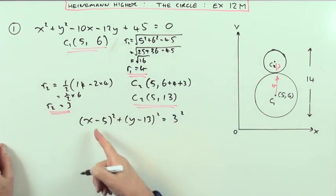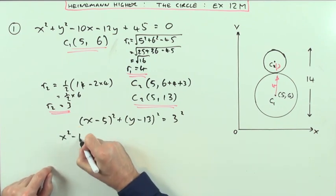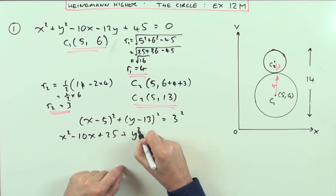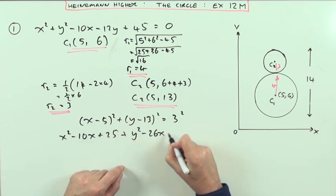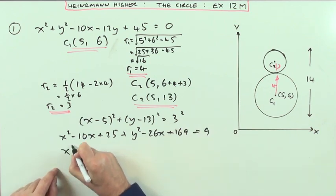Squaring a bracket: square the first, twice the product, square the last, square the first, twice the product. Oh, that should say 26y. Sometimes you just don't realise what you're writing down. Square the last, and then that's 9. And then just tidy it up into the standard form.